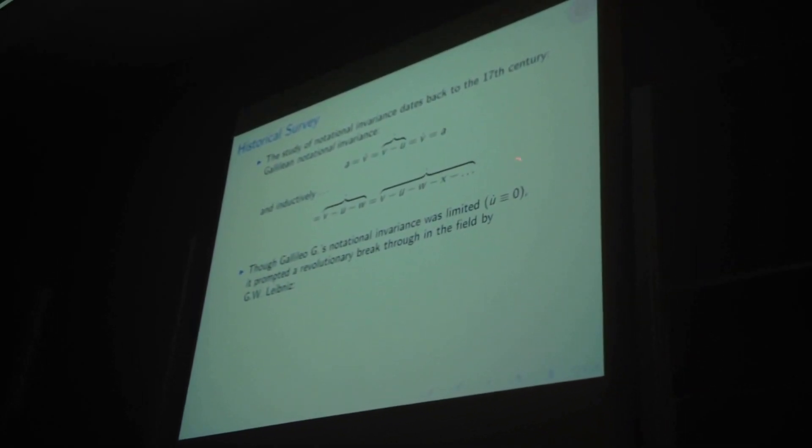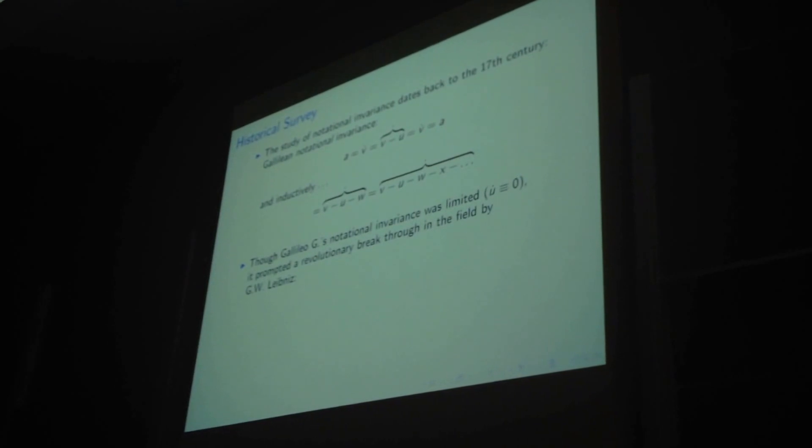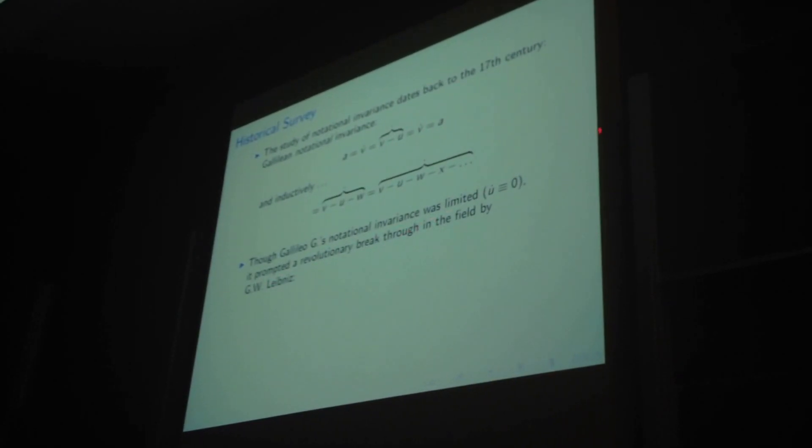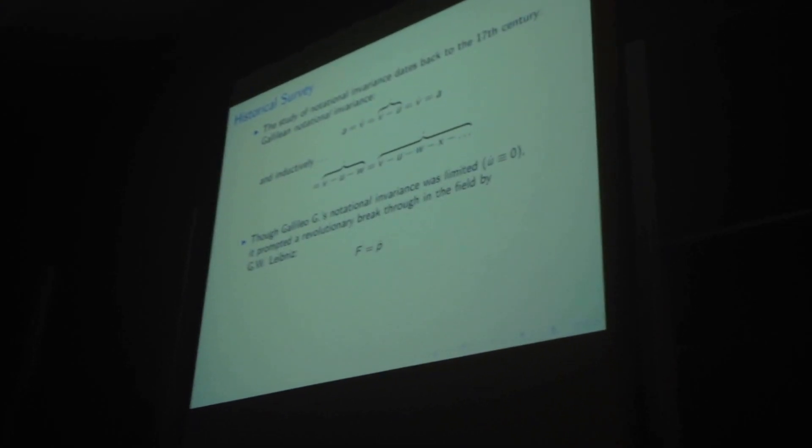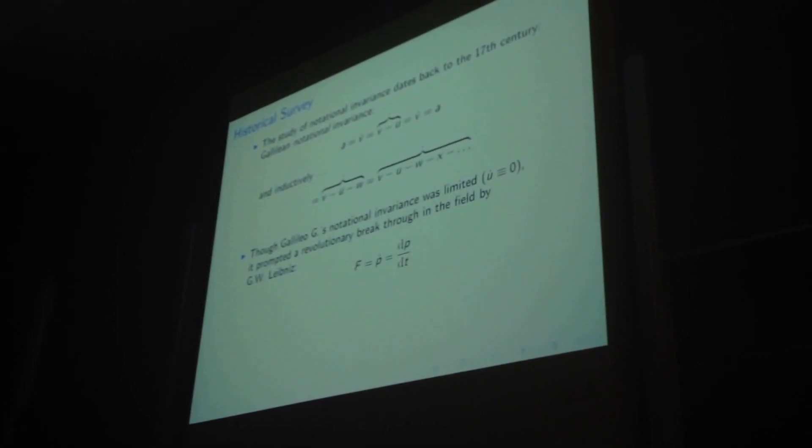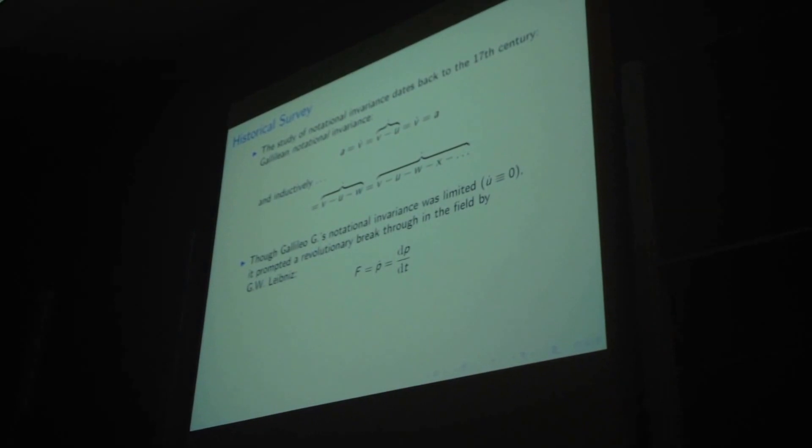However, this is quite limited because it required that your letters don't change with time. But it did prompt a revolutionary breakthrough by Leibniz. Namely, he saw that s equals p dot, for Newton, also equals dp dt. And it completely opened the field to new discoveries.